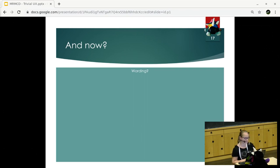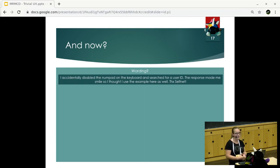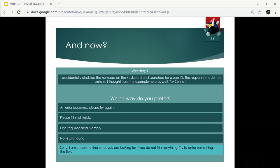Then, regarding wording. User experience also has a lot to do with wording. Last week, I accidentally disabled my numpad on the computer. It happens. And I wanted to search for a user ID. And the response of the system made me smile a little bit. So, I wanted to share it as well. So, thanks to SelfNet for the example. Which way do you prefer? An error occurred. Please try again. Please fill in all required fields. One required field is missing. No results found. Or, in the case of SelfNet, it was, sorry, I'm unable to find what you're looking for if you do not fill in anything. Try to enter something in the field. So, I even hear some of the people here smiling a little bit in the room. So, that has something to do with user experience. You do not just tell the user what to do, but you make them smile about it. And you will feel better with the system.